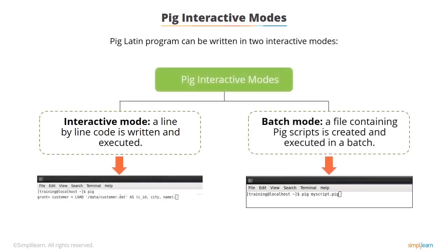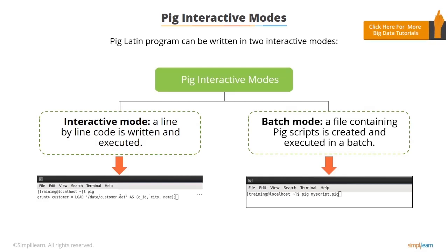The two modes in which a PIG Latin program can be written are interactive and batch. Interactive mode means coding and executing the script line by line, as shown in the image. In batch mode, all scripts are coded in a file with the extension .pig and the file is directly executed.